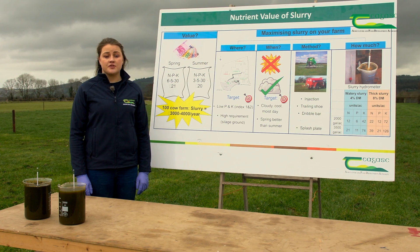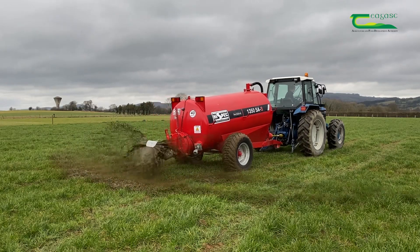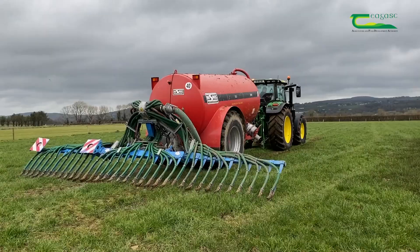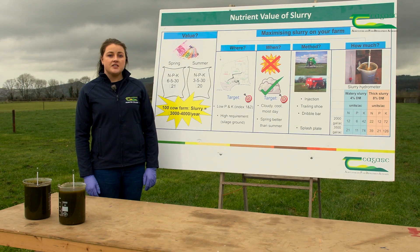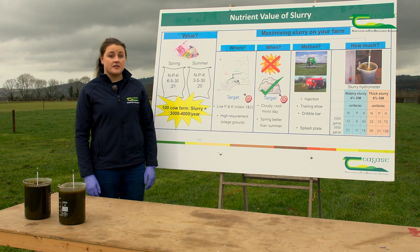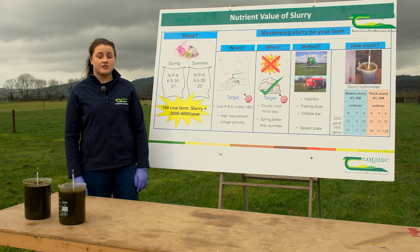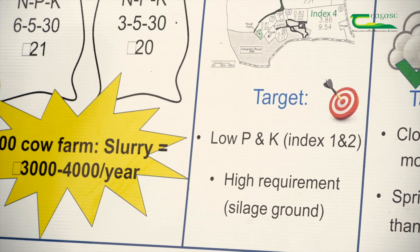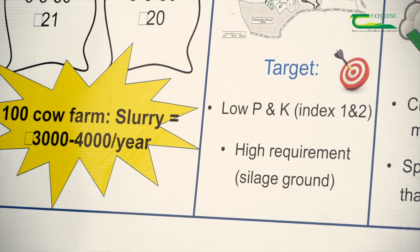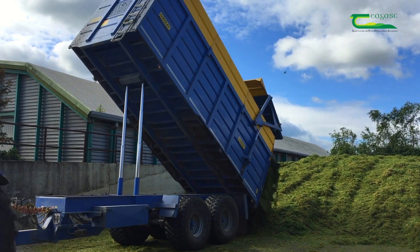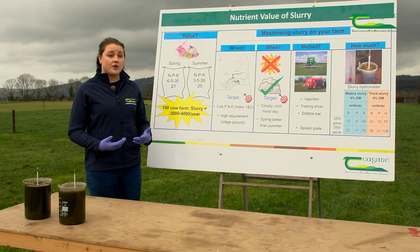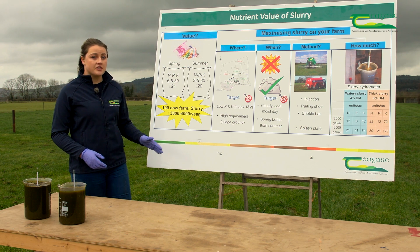Slurry is a valuable resource when used correctly — targeting paddocks that need it most and spreading it in the right conditions to minimize losses through volatilization and runoff into water bodies. We want to target spreading slurry in the springtime, targeting low index paddocks for P and K. It's also important to incorporate slurry into silage ground to complete the nutrient cycle, as nutrients from silage fed to cows are returned in slurry.